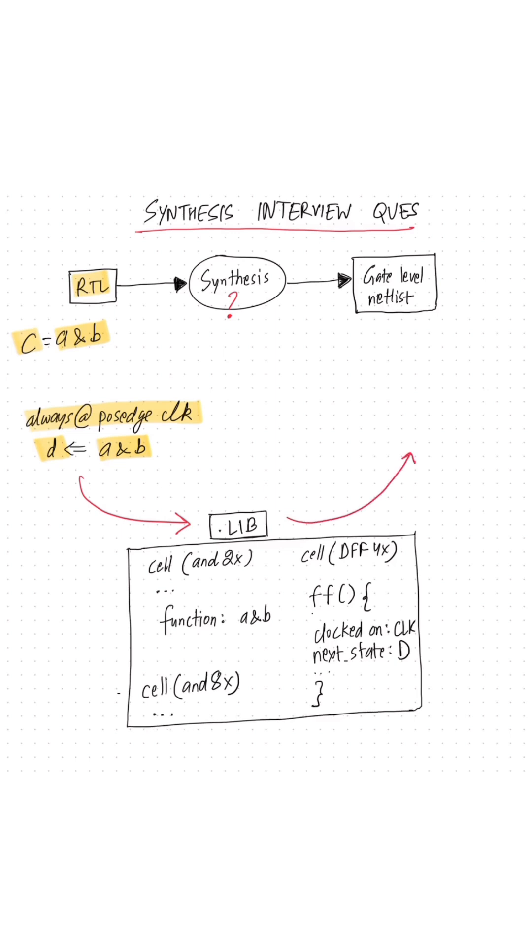For every combinational cell definition in the dotlib, there is an attribute called function which defines what that cell does. Here we can see that this cell is an AND gate based on the function attribute. The synthesis tool can use this cell to map this particular statement from the RTL.